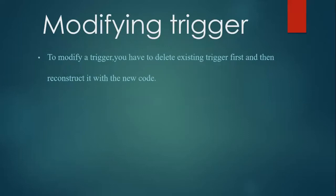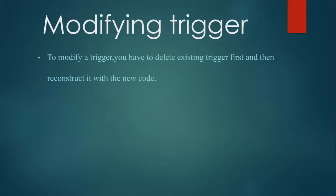The next point is modifying triggers, which uses the ALTER command. To modify a trigger, you have to delete the existing trigger first and then reconstruct it with the new code — that means reconstruction of that particular trigger.